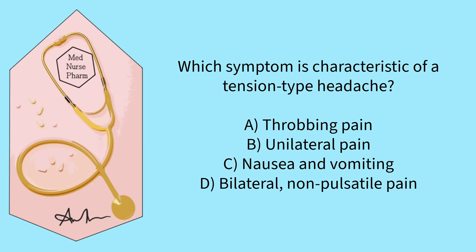Which symptom is characteristic of a tension type headache? Options: throbbing pain, unilateral pain, nausea and vomiting, or bilateral non-pulsatile pain?